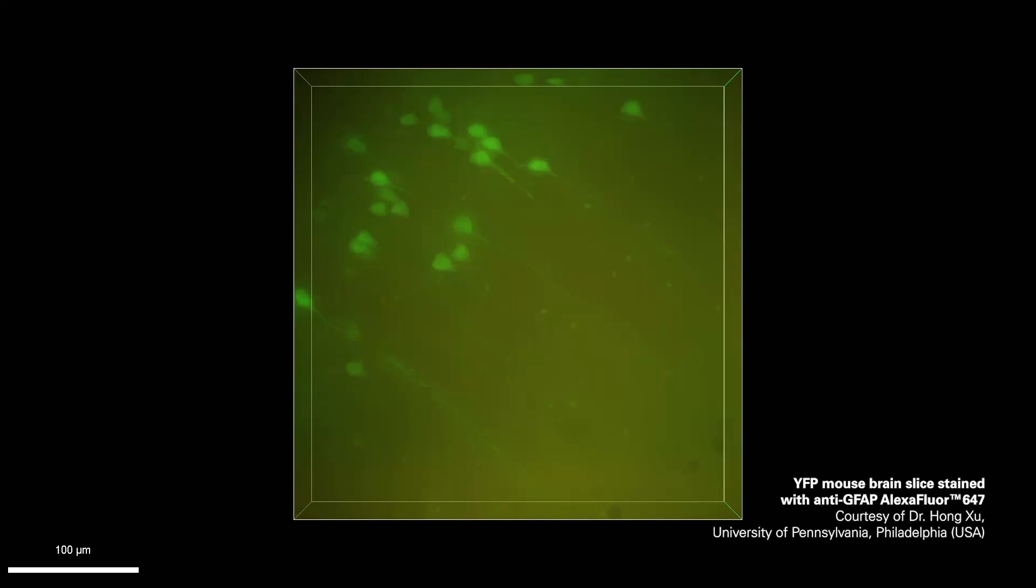If you image a brain slice on a wide-field microscope, for example to follow an axon or neurites of neuronal cells, you typically get a blurry image. The deeper you go inside, the much more out-of-focus light you gain.